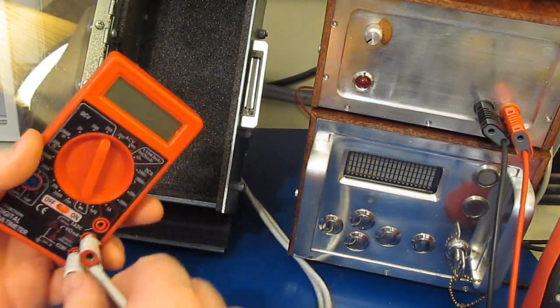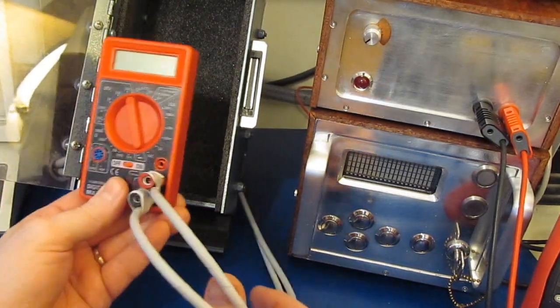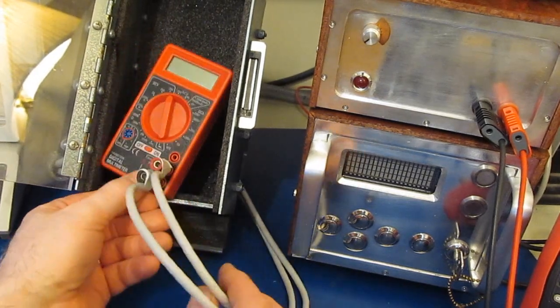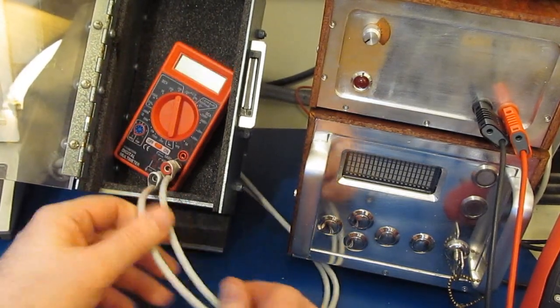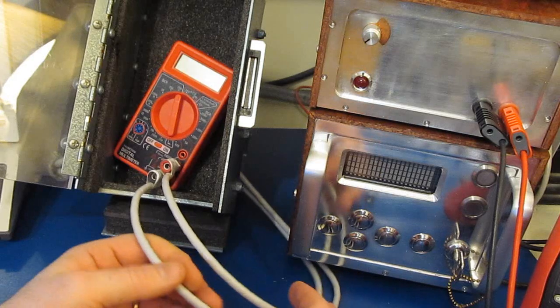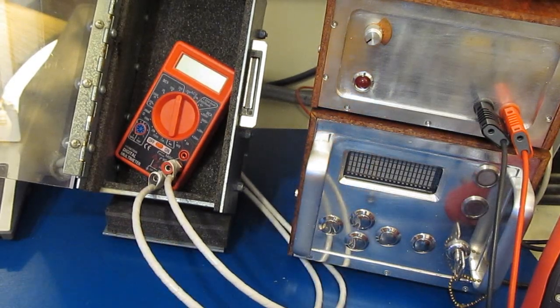So again, we're going to have the meter just set to its DC voltage mode. I've got this meter buttoned up, so if the pressure shock is enough, maybe we can crack the case open. We'll see what happens.